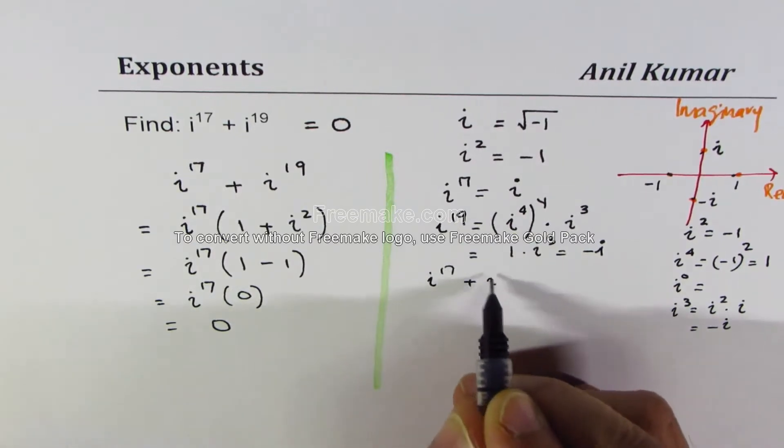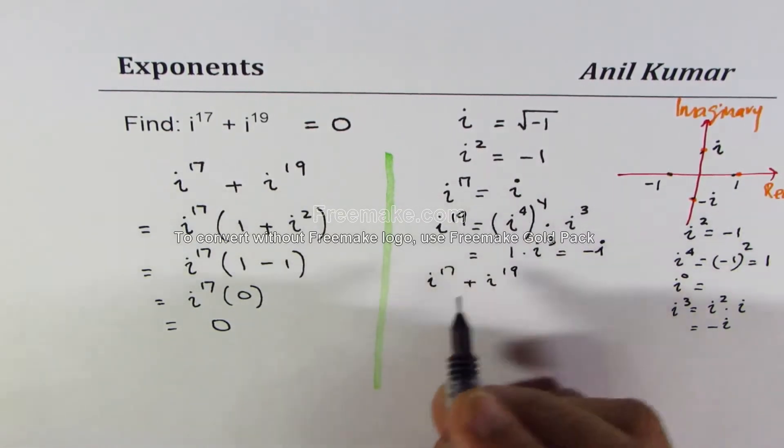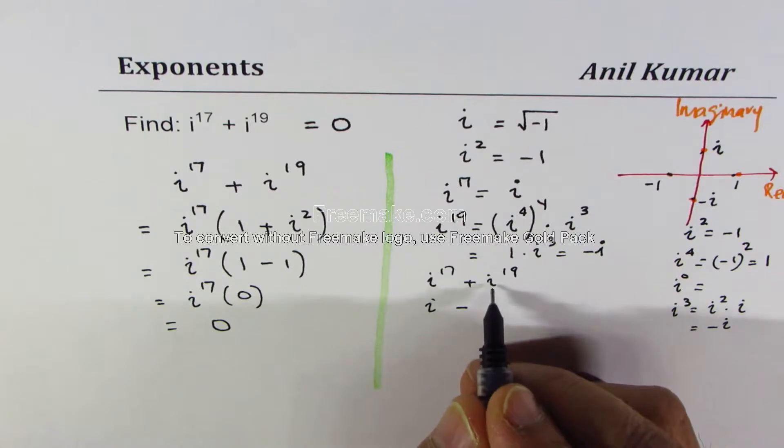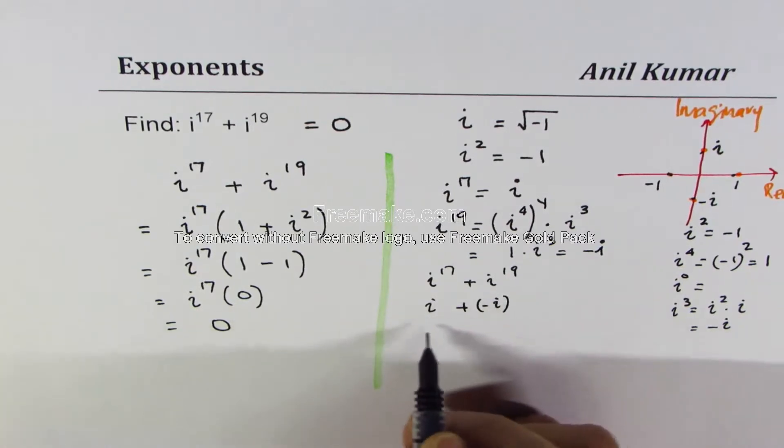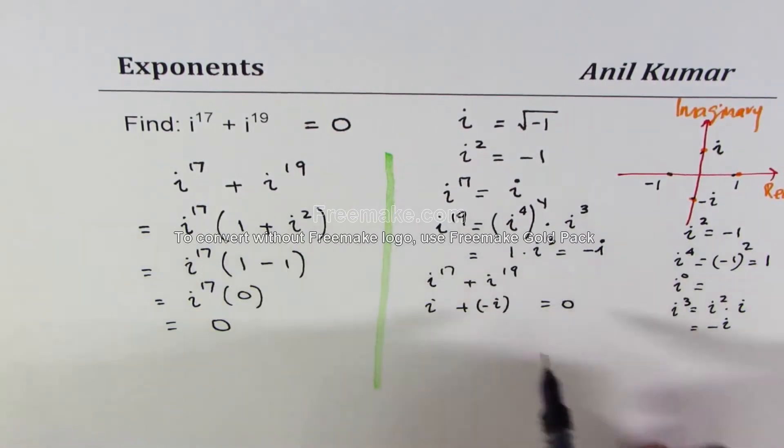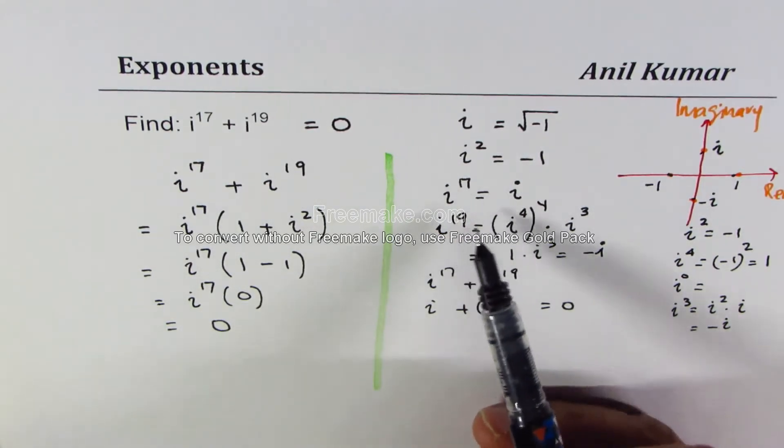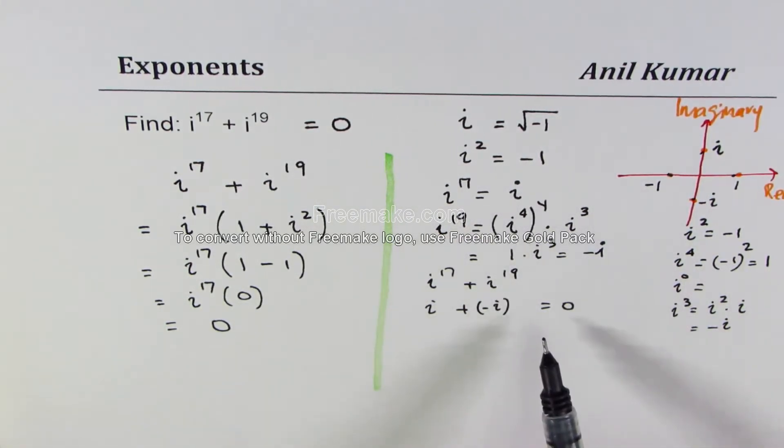So you could write i to the power of 17 plus i to the power of 19. 17 is i and i to the power of 19 is minus i. So we should do i plus minus i and that gives you 0. So that could be another way of doing it, find each value individually and then do it.